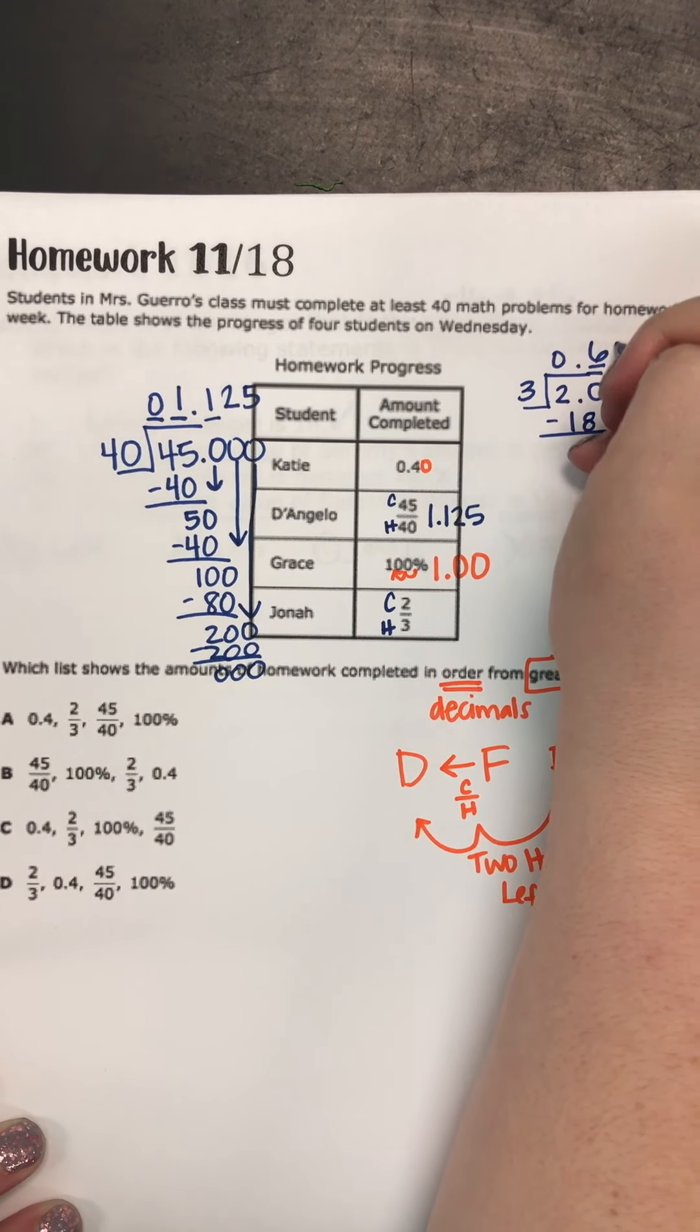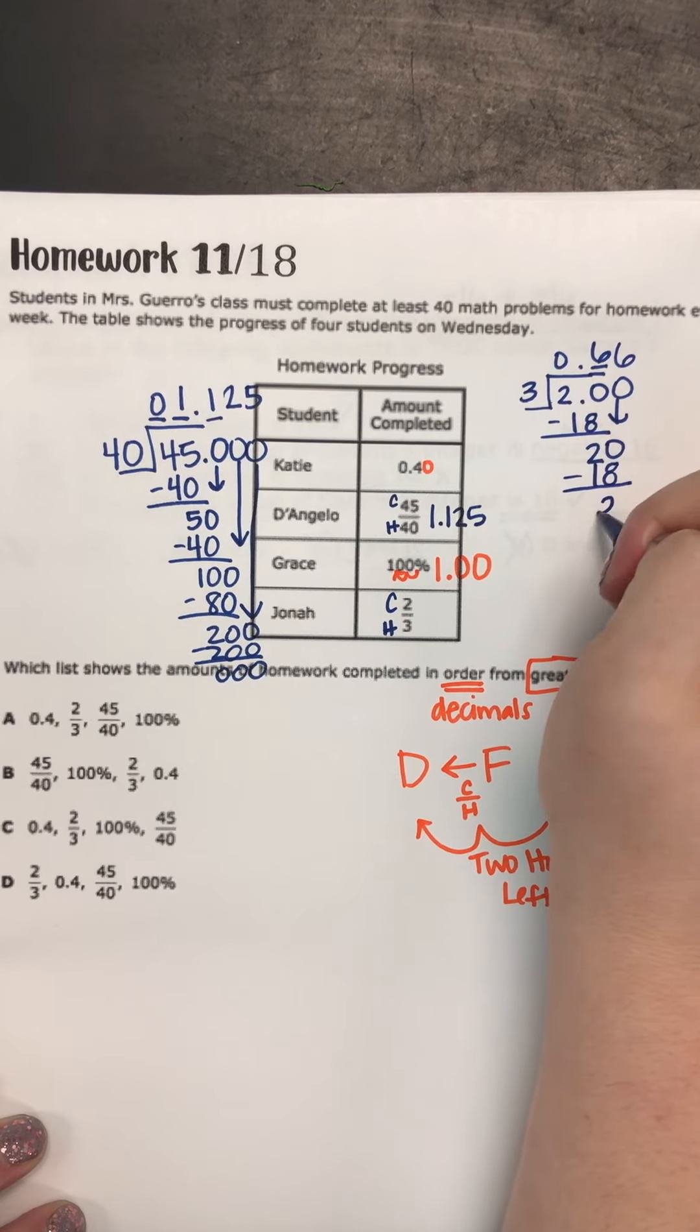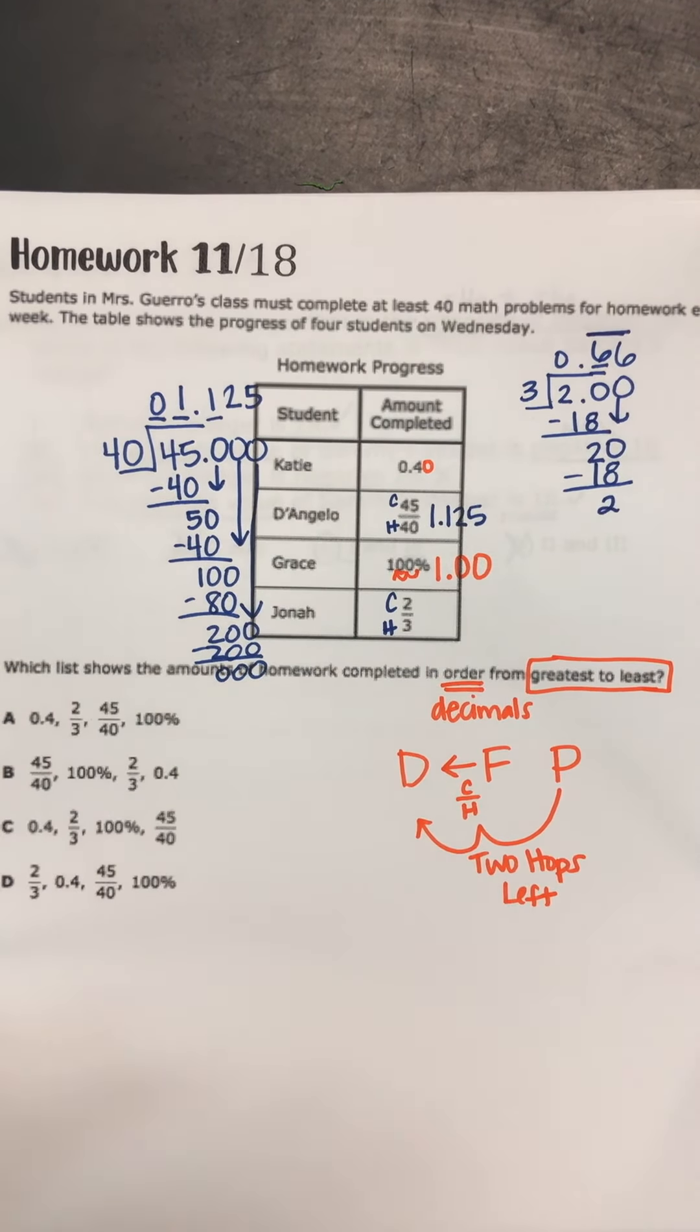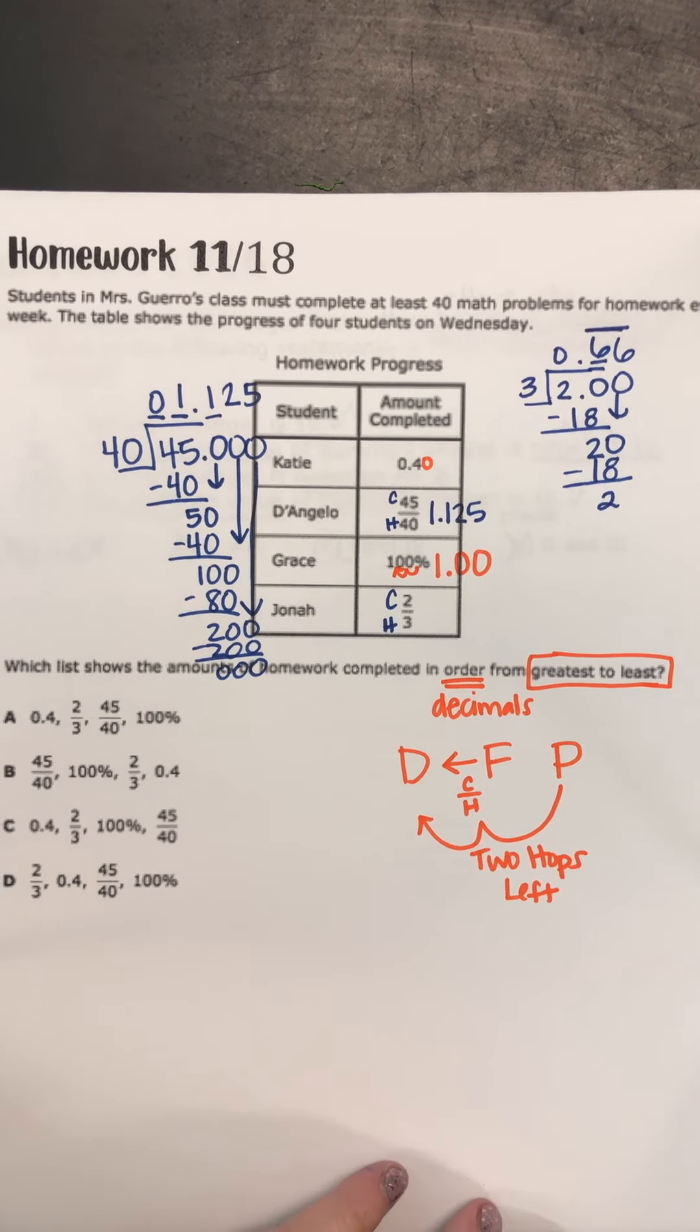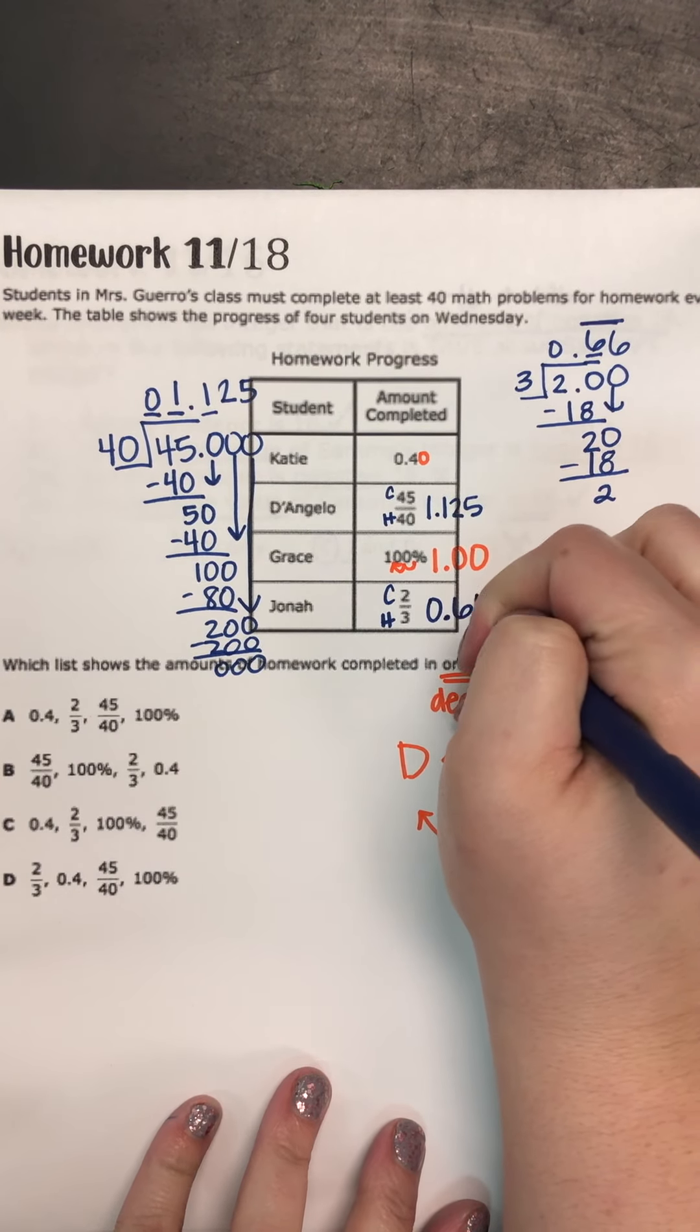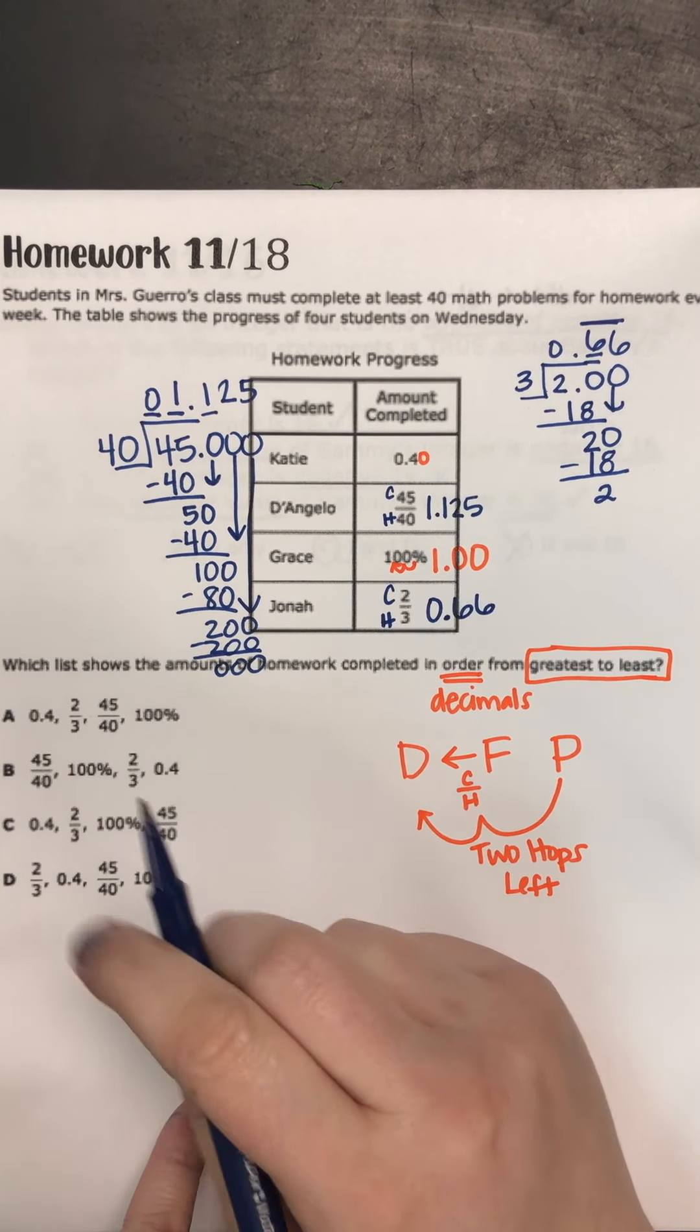Eat another donut. 20 again. Six again. Six times three is 18. So we're going to keep getting that two. So this is going to be a repeating decimal, meaning it's going to be 0.6 into infinity. So again, we're going to do 0.66. And I'm going to leave it just like that, just so that it looks like money.